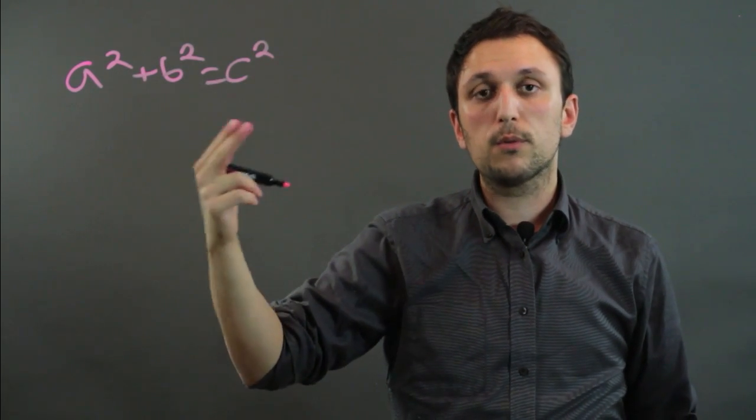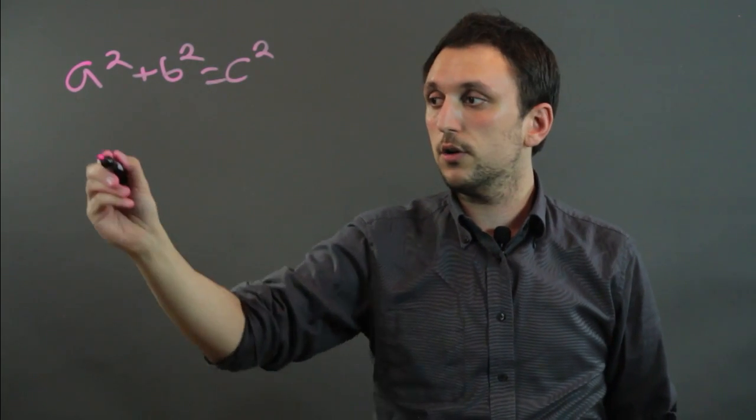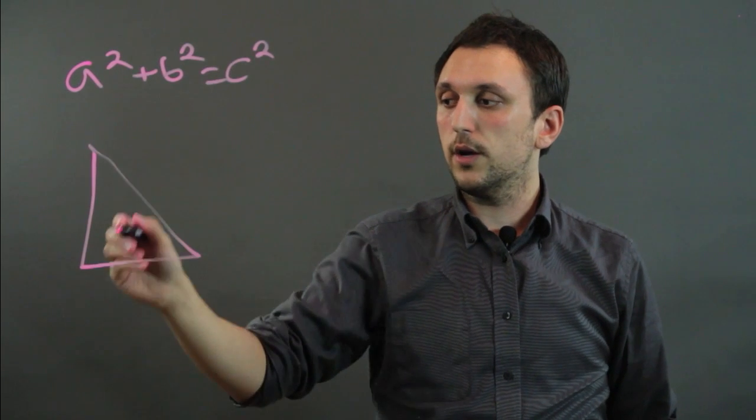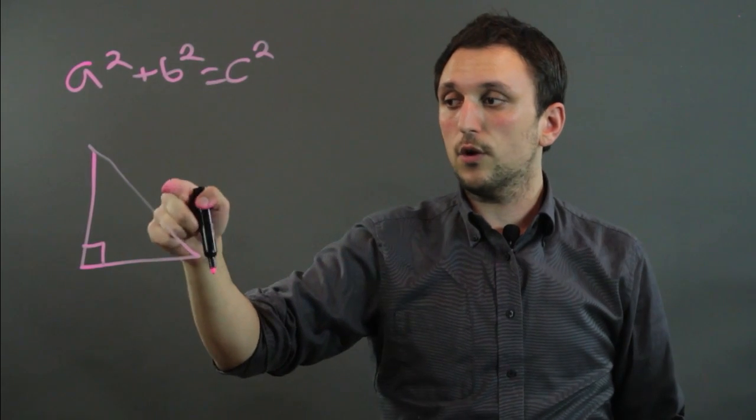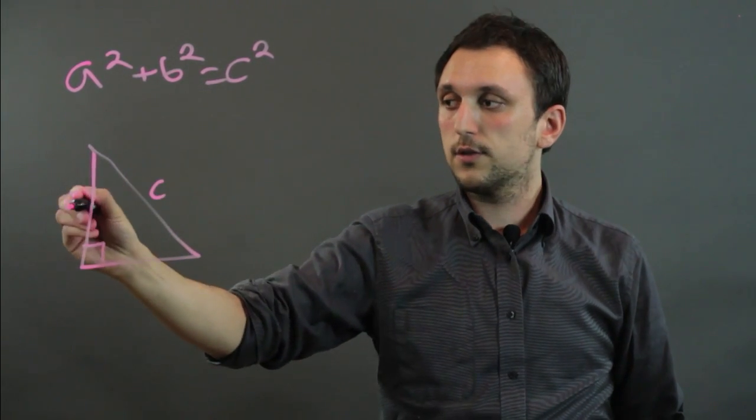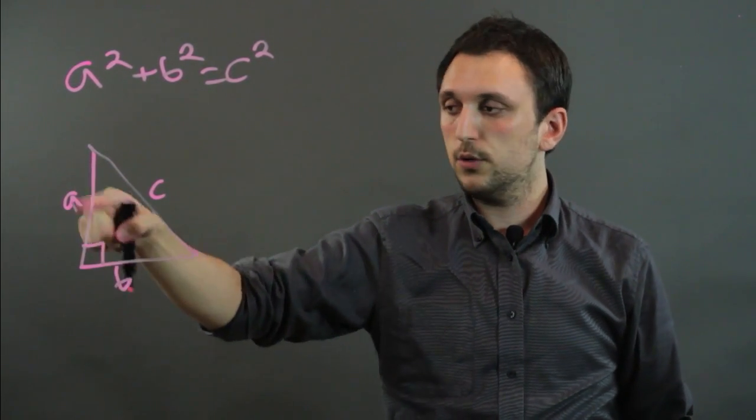The a, b, and c represent legs on a right triangle. So here is a right triangle. The hypotenuse is always opposite the right angle, and this is always c. This can be a, and this can be b, but you can switch them up as well.